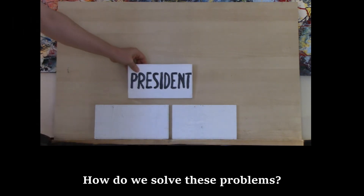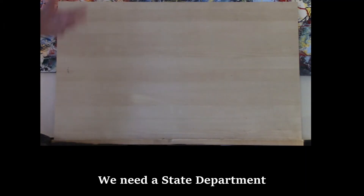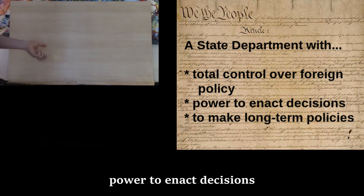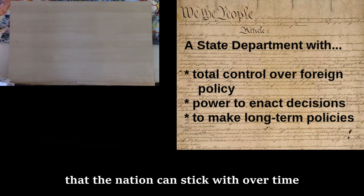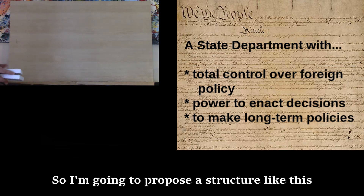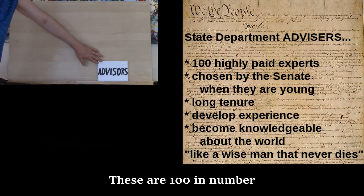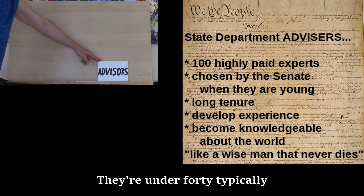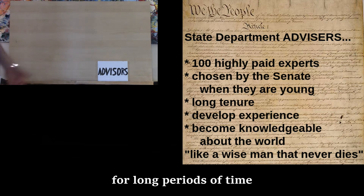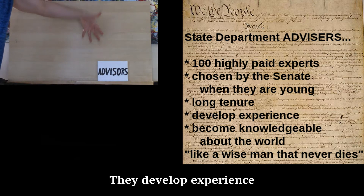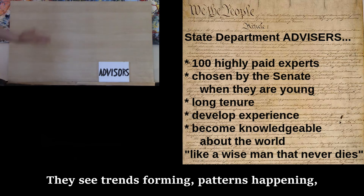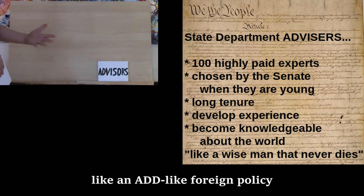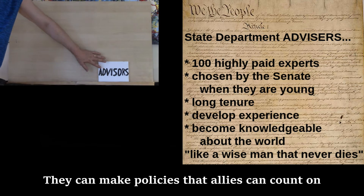We need a State Department — one branch of government with total control over foreign policy, with the power to make long-term policies that nations can stick with over time. I propose a structure with advisors, one hundred in number, highly paid, chosen by the Senate when they're young — typically under 40 — and they stay in the State Department for long periods: 10, 20, 30 years. They develop experience, become knowledgeable about the world, see trends forming. As de Tocqueville said, it's like a wise man who never dies. They can make policies that allies can count on.